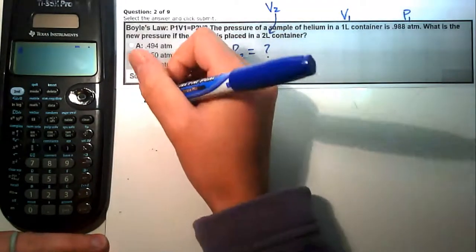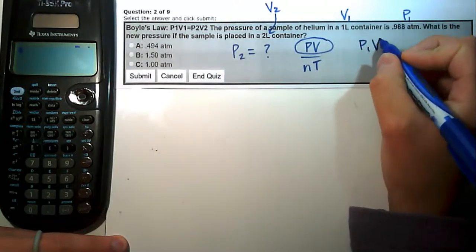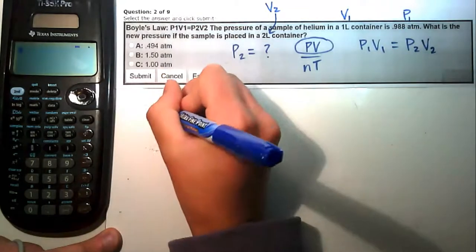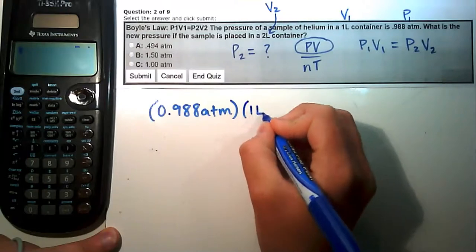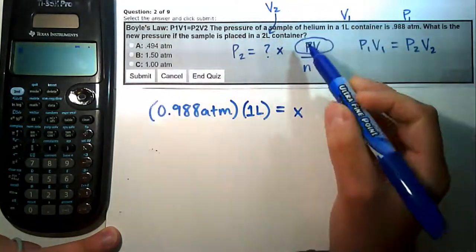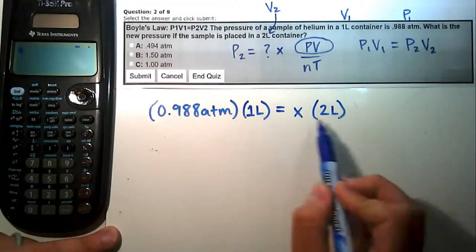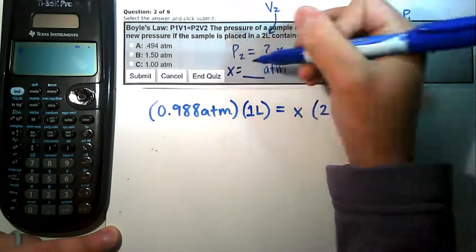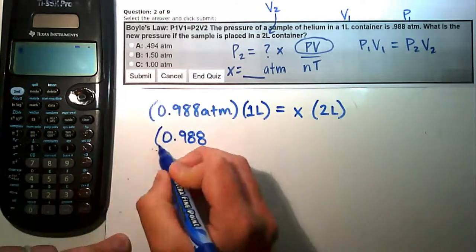We have P1, V1, V2, and we're looking for P2, so we use P1 times V1 equals P2 times V2. Substituting: 0.988 atm times 1 liter equals P2 times 2 liters. Our answer will come out in ATM since our pressure units are in ATM. Removing units simplifies this to 0.988 times 1 equals 2X.